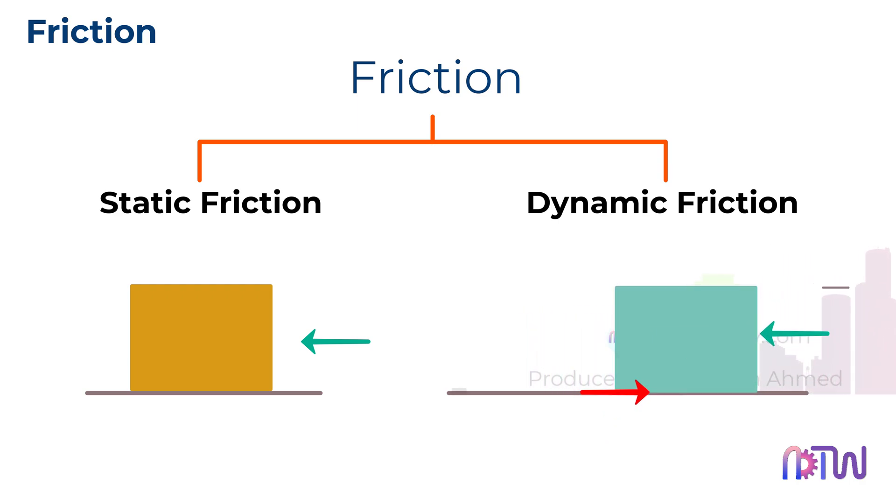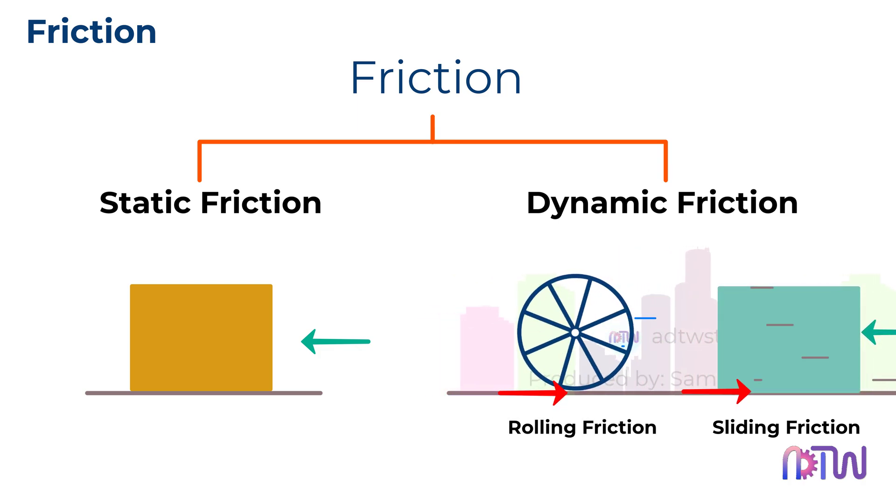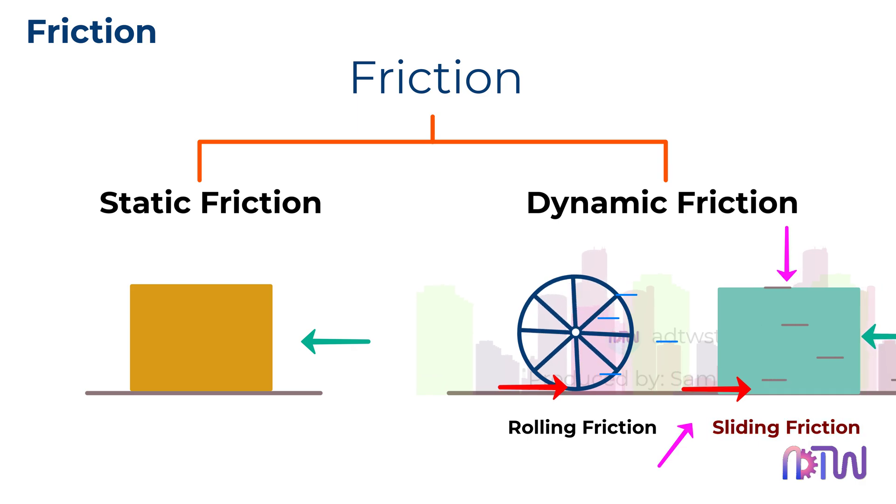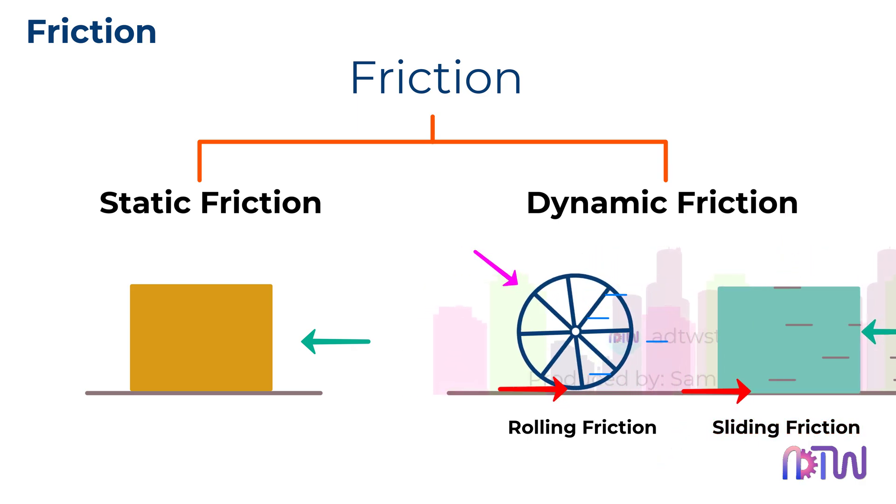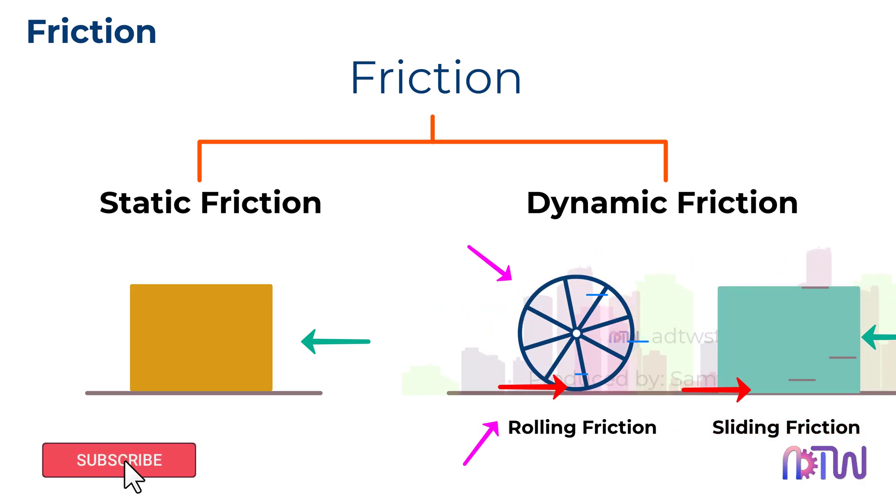Dynamic or kinetic friction is further classified into sliding friction and rolling friction. When a body is sliding over a surface, such as this box, the frictional force in action is called sliding friction. Whereas if a wheel is rolling over a surface, the frictional force in action is called rolling friction.